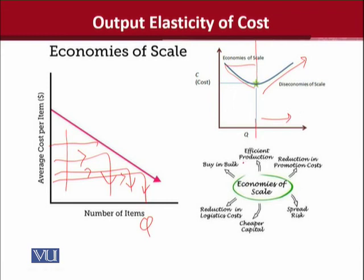Iski underlying reasons, they can be efficient production, buying in bulk, or reduction in logistic costs, or cheaper capital, or spreading the risk, or reduction in the promotion costs. Yeh saare benefits, in channels se exist karte hain, aur jab hum apni output ko barhaate hain. Therefore, cost will be on the declining side, and the economies of scale will exist.